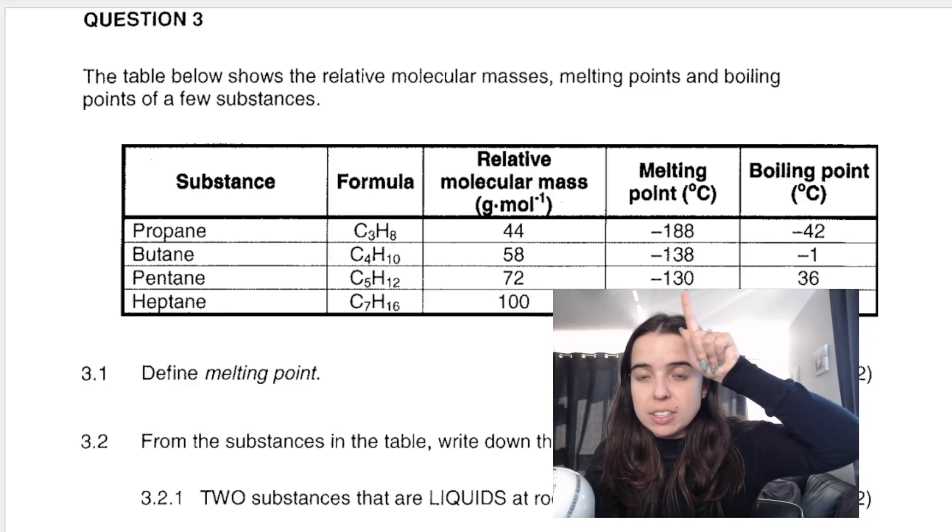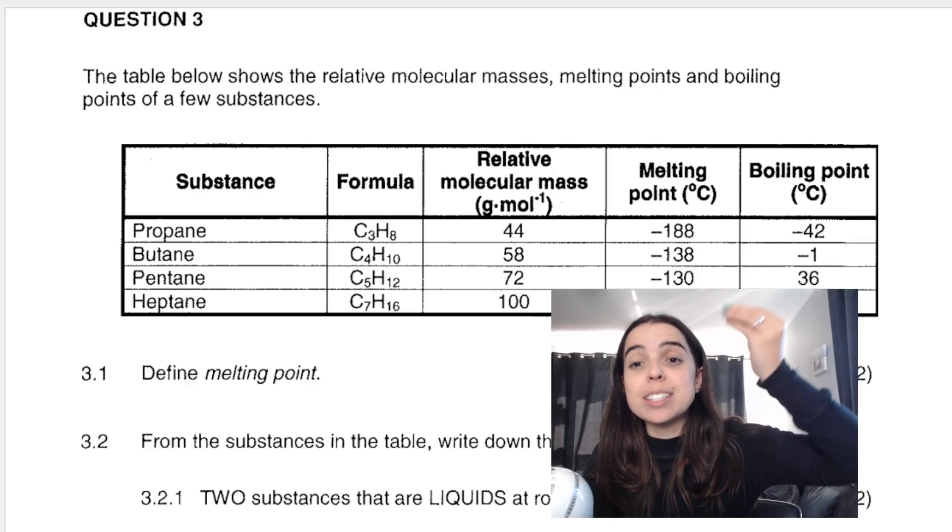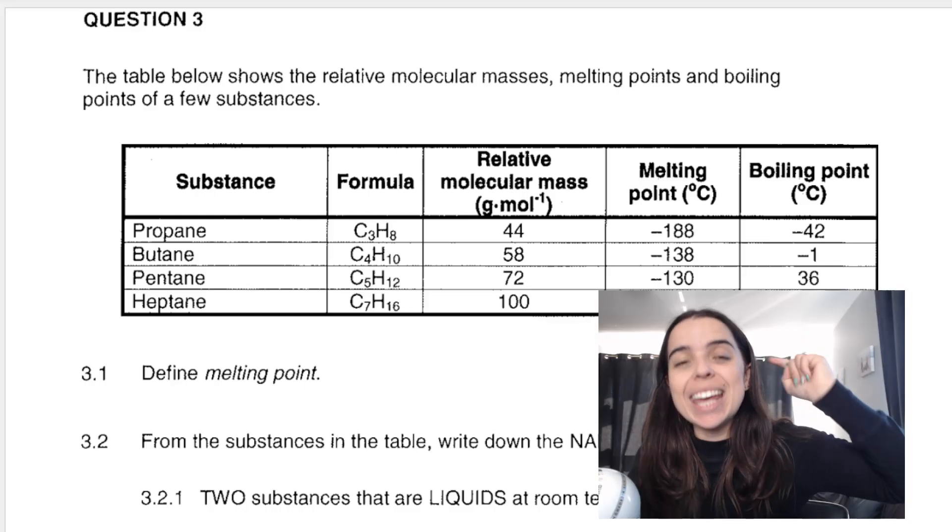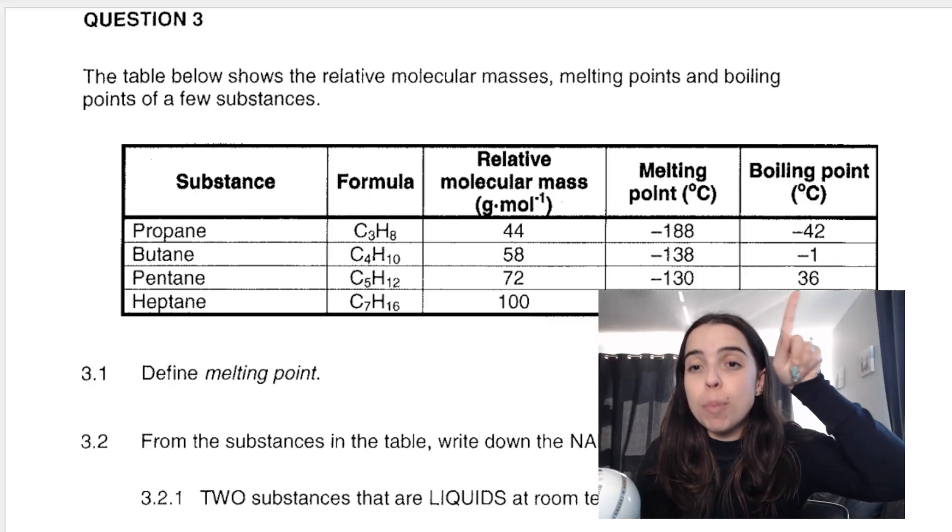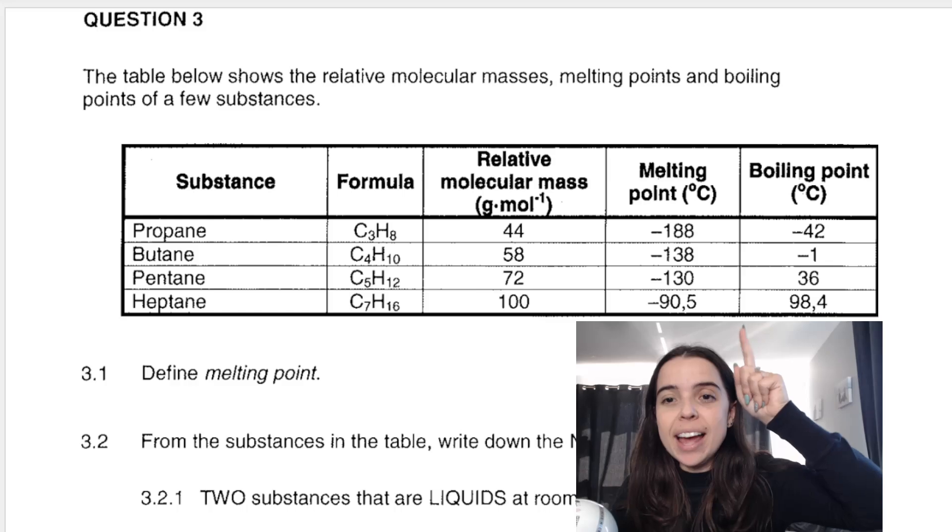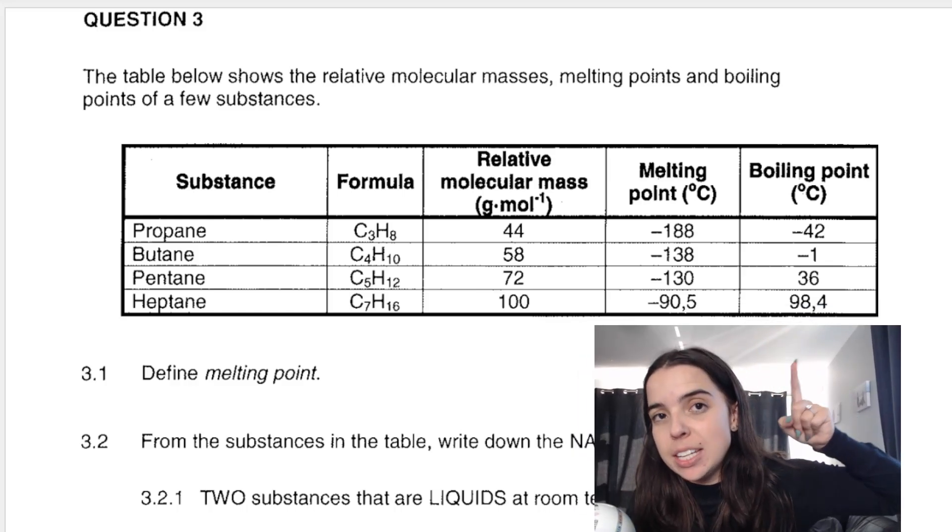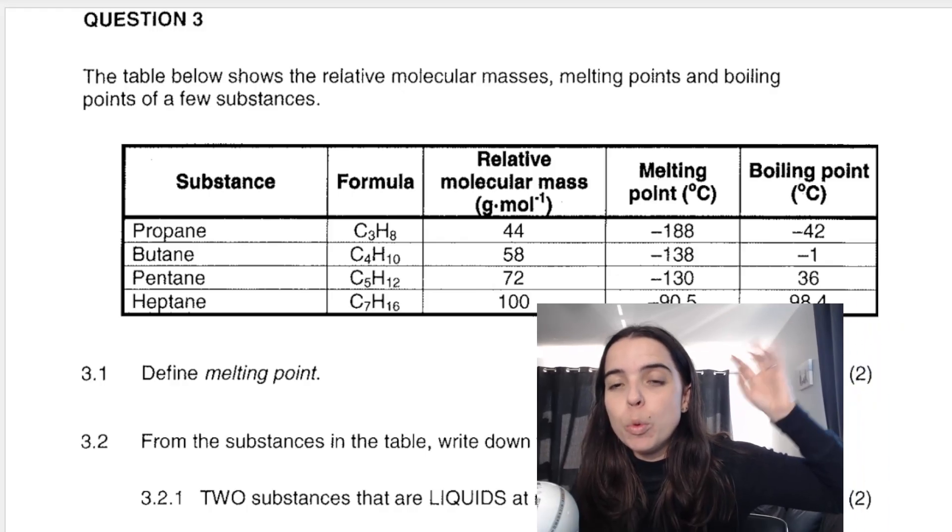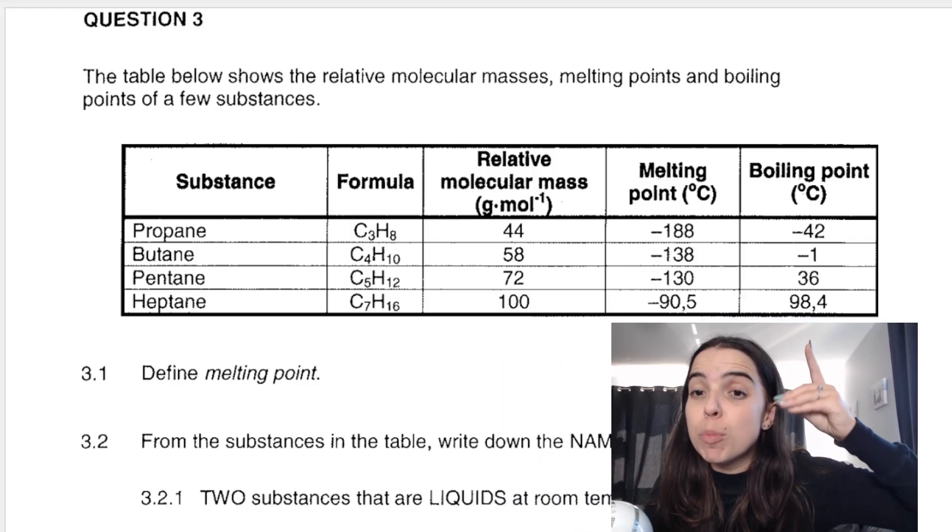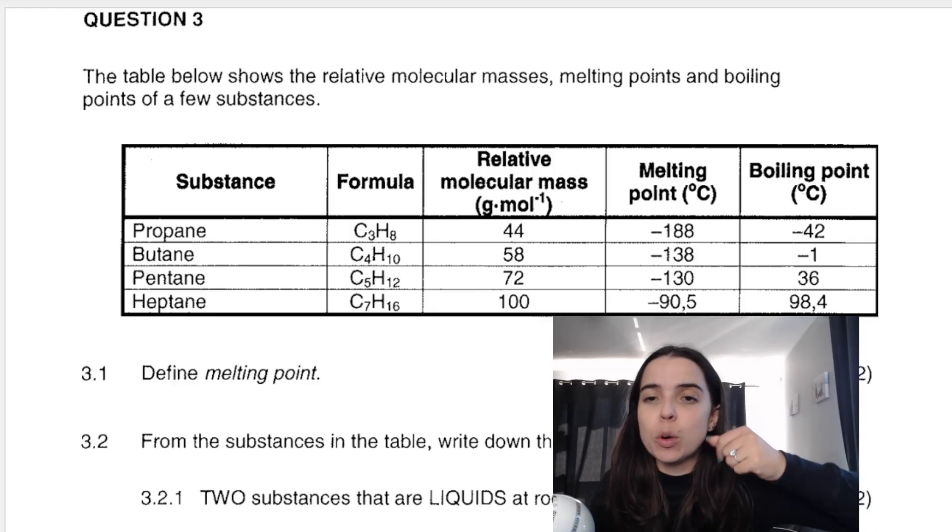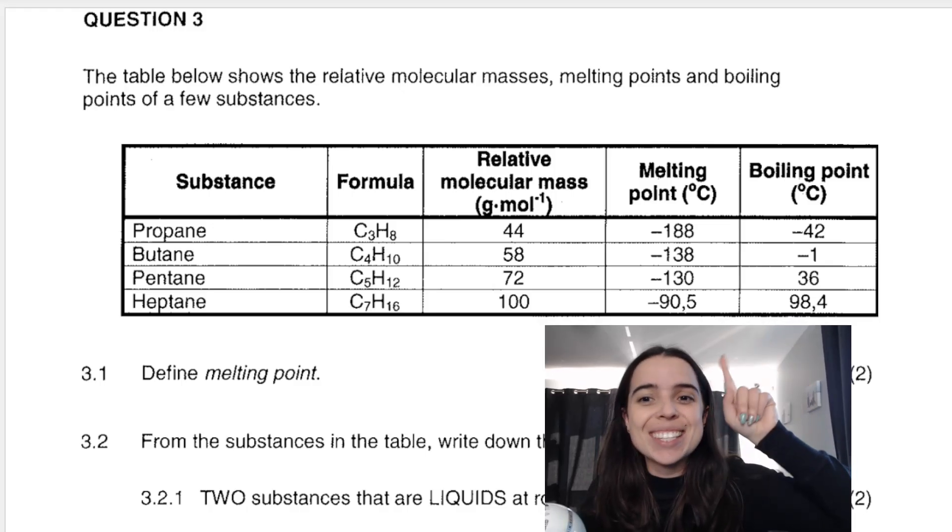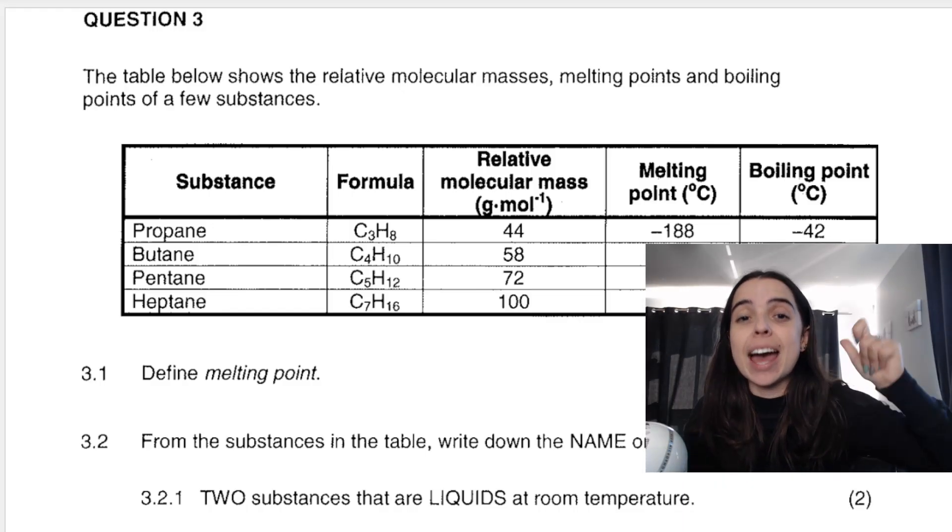So if you look at pentane, the melting point is at negative 130. Then as we increase the temperature, it's a liquid at 20 degrees Celsius, it has not yet boiled. It is still a liquid. It only boils at 36 degrees Celsius. So pentane is one of our correct choices, as well as heptane. Heptane only boils at 98.4 degrees Celsius, which means that all the temperatures above negative 90.5, but before 98.4, it's a liquid. So heptane is a liquid at 20 degrees room temperature, 25 degrees, 30 degrees, at 40 degrees, at 50 degrees, it's still a liquid. So your answer, pentane and heptane.